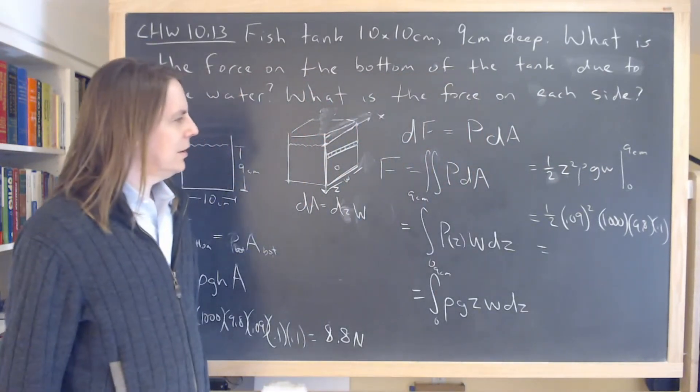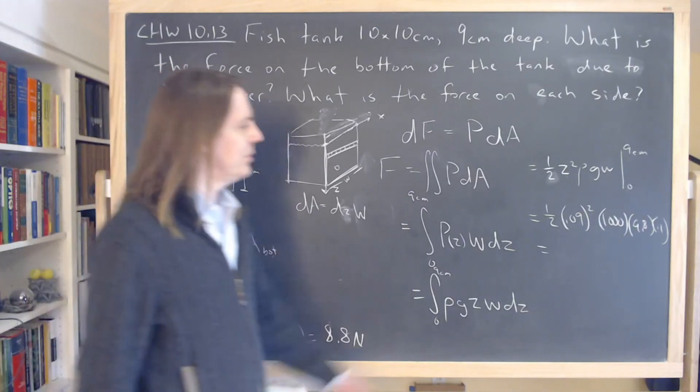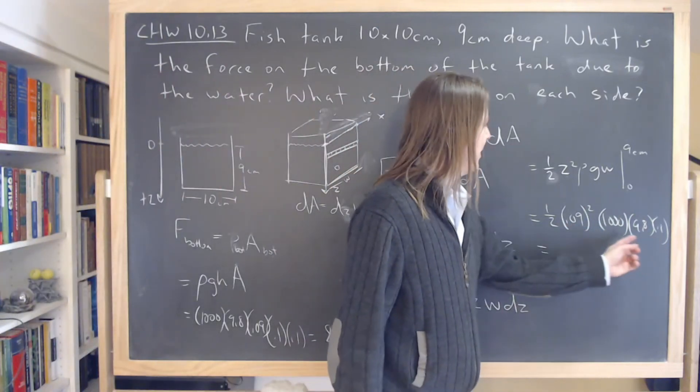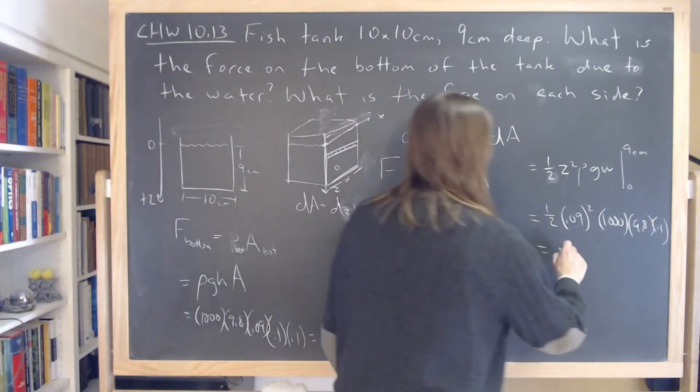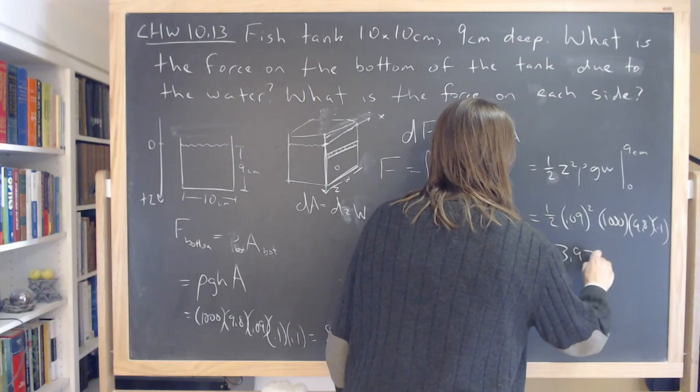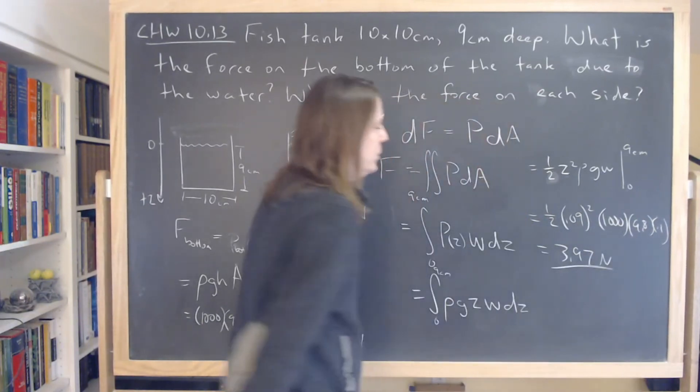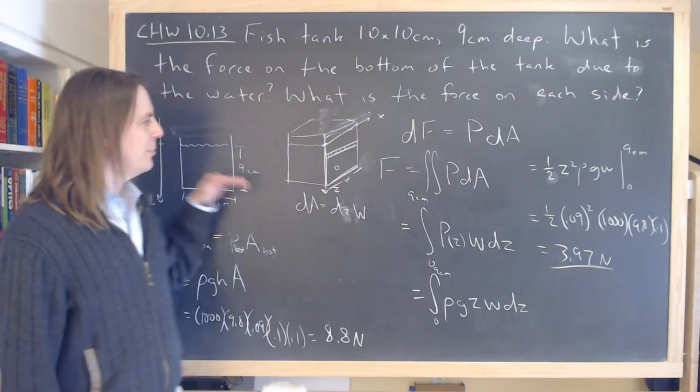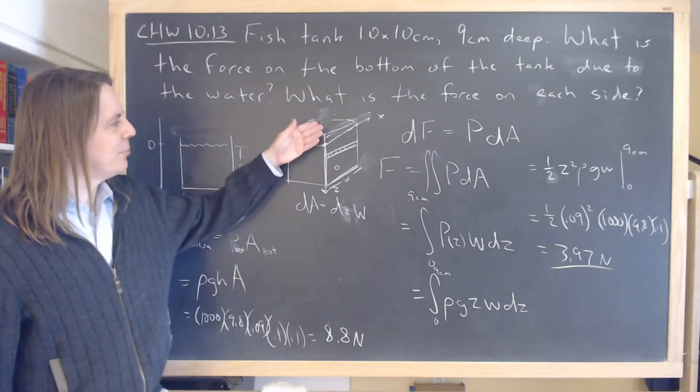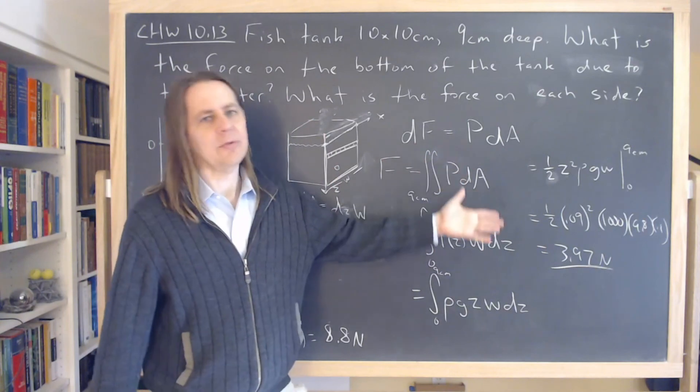And, oh, you know, we could estimate it here. This is like 0.1 times 0.1 times 0.1 cancels that. It's roughly half of 9.8. So, and I get 3.97, which is roughly half of 9.8. So there you go. You can get the force at the bottom and the pressure's constant. Simple. F equals PA. If the pressure varies in a dimension, you have to do an integral.